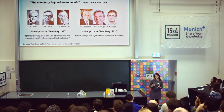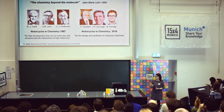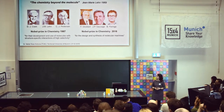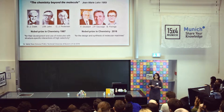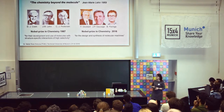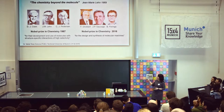Supramolecular Chemistry is a relatively new topic in chemistry. It was just defined in 1969 by Jean-Marie Lehn as the chemistry beyond the molecule. And even though being quite relatively new, the topic has already been awarded two times with the Nobel Prize in Chemistry — the first time in 1987, and the other one just recently in 2016.